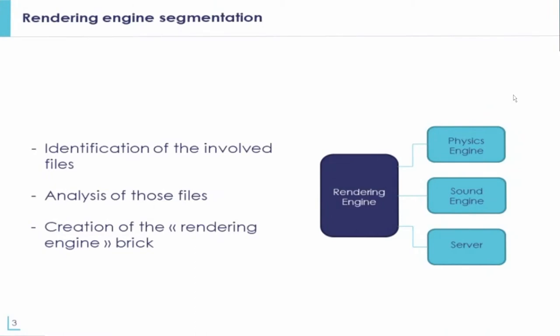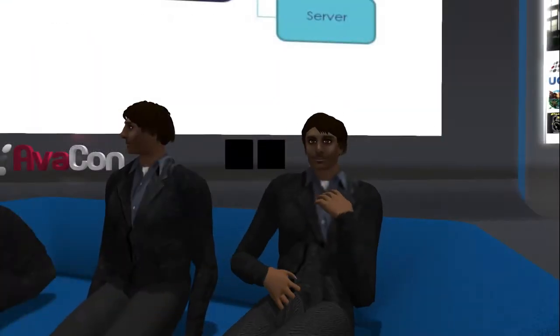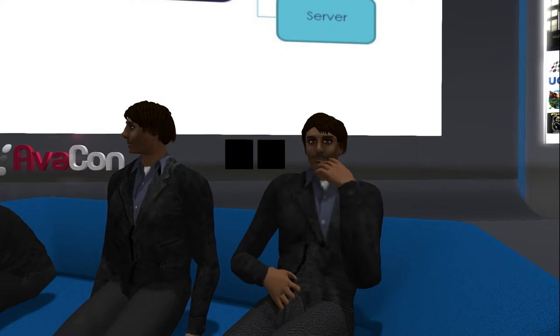Our mission was to upgrade the rendering engine of the SceneGate viewer. Our first mission was to analyze the code of the SceneGate viewer in order to identify the rendering part and regroup them together. We decided to classify the files involved in the graphic engine according to their uses, looking for the central files which manage all these functionalities, which allowed us to identify all those necessary to their functioning.